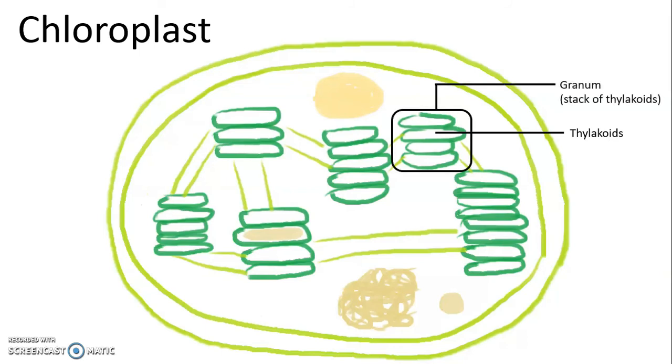When thylakoids are stacked up, we call the structure granum. Carbohydrates produced by thylakoid can be stored as starch granule. While lamella is the skeleton of chloroplasts, it makes sure that the thylakoids have a safe distance from each other and maximize the efficiency of the organelle.